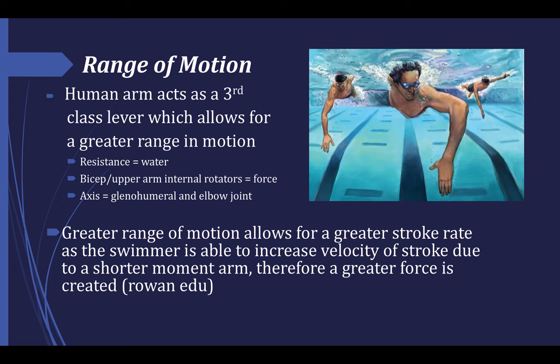To begin, a swimmer's range of motion is crucial to the swimmer's ability to perform the most efficient stroke. For some background, humans have on average about 180 degrees of arm flexion, between 45 and 60 degrees of extension, about 150 degrees of abduction, and about 30 to 50 degrees of adduction. Human arms are also able to perform about 70 to 90 degrees of medial rotation with a bent elbow and around 90 degrees of lateral rotation. The main reason for the huge range of motion is because the human's upper limbs act as a third-class lever, which allows for a greater range of motion. With the water acting as the resistance, the bicep and other upper arm internal rotators acting as the force, while the axes at which the lever can rotate are the glenohumeral and elbow joints.